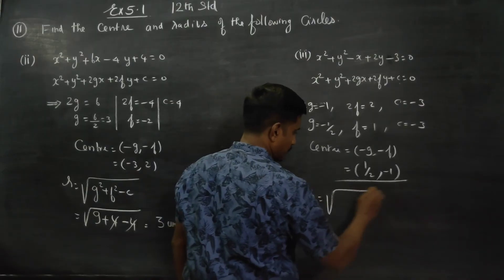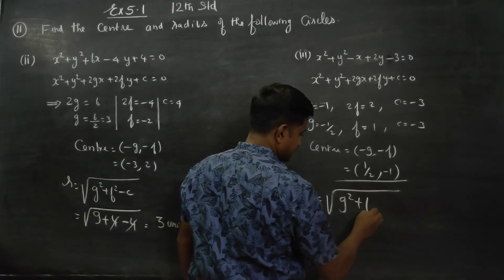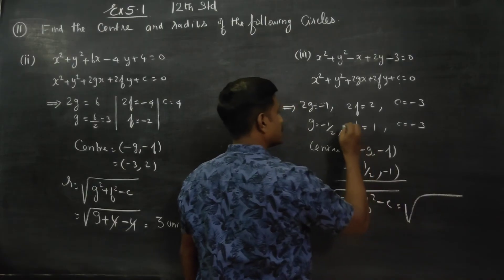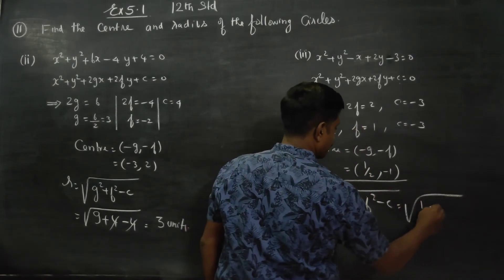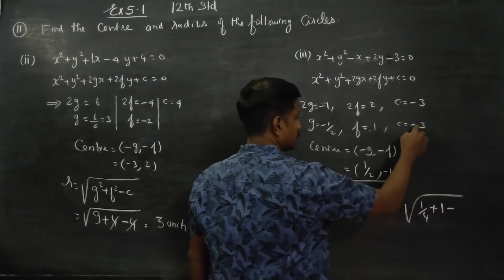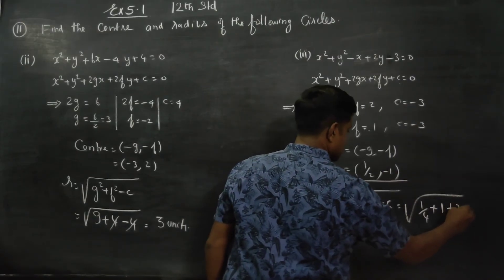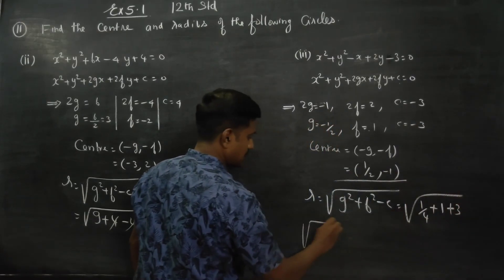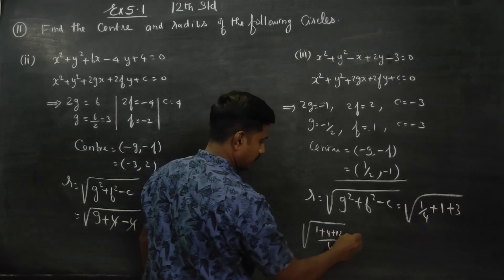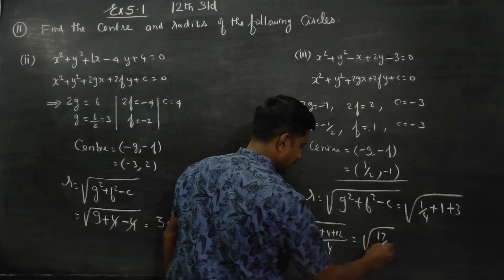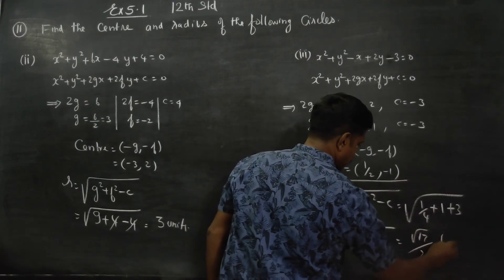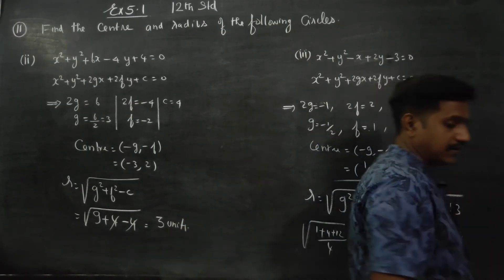Coming to the radius: radius equals square root of g² + f² − c. Square root of (1/2)² + 1² − (−3), which is square root of 1/4 + 1 + 3 = square root of 1/4 + 4 = square root of 17/4. So radius is root 17 divided by 2 units. This is my radius.